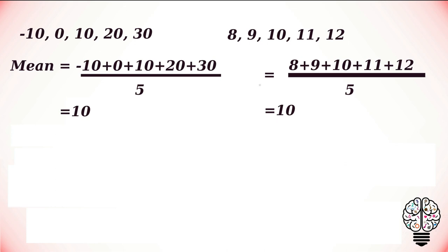If you calculate the range for these two data sets: for the first data set, we get 40 by calculating 30 minus -10. A minus and minus gives us a plus, so the range is 40. In the second data set, 12 minus 8 gives us the range 4. From this, we can understand that the first data set is a more dispersed set than the second.